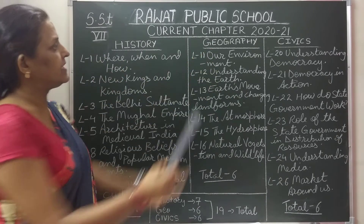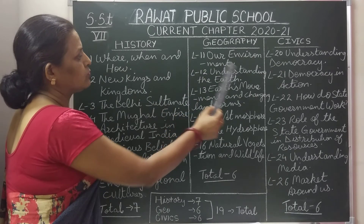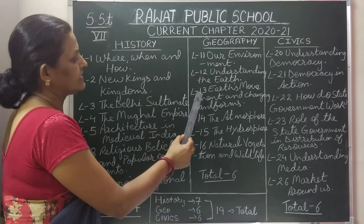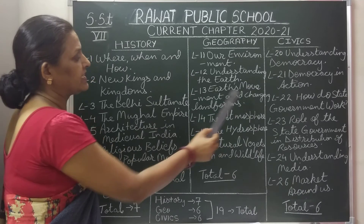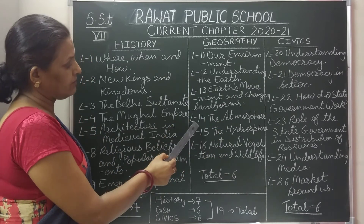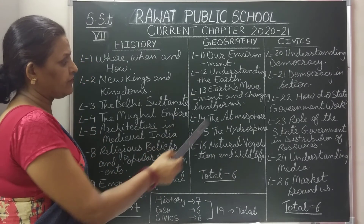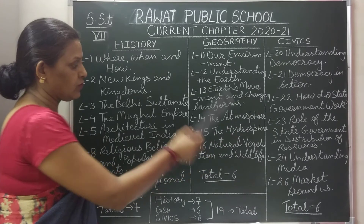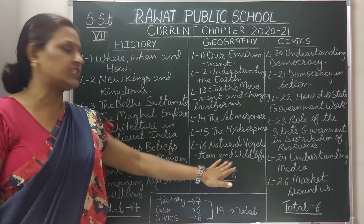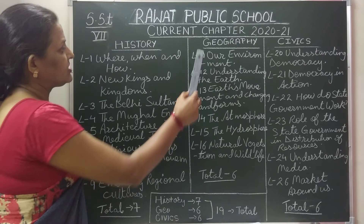In geography, lesson number 11: Our Environment. Lesson number 12: Understanding the Earth. Lesson number 13: Earth's Movement and Changing Landforms. Lesson number 14: The Atmosphere. Lesson number 15: The Hydrosphere. Lesson number 16: Natural Vegetation and Wildlife. This year we will learn 6 chapters in geography.